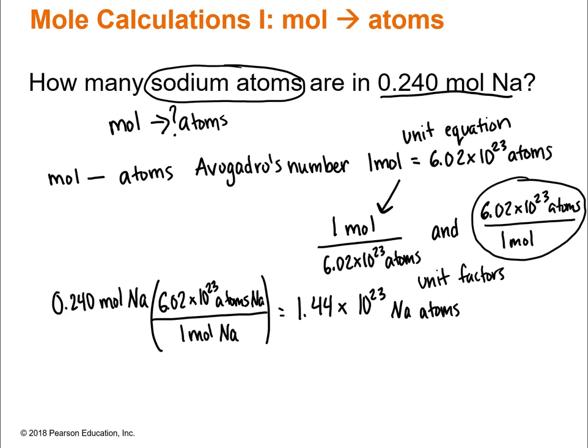You'll need to brush up on scientific notation using your calculator and putting in exponents. Don't forget units — if you just give me a number, that's not good enough and you'll lose points. Tell me what that number means. In this case, we've got sodium atoms. That's our first problem type: moles to atoms.